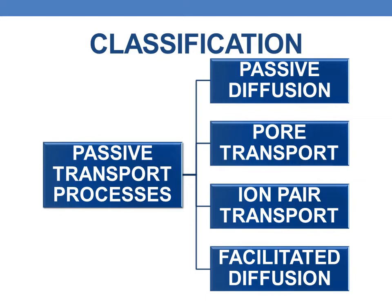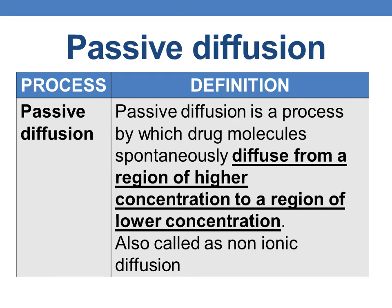Passive diffusion is a process by which drug molecules spontaneously diffuse from a region of higher concentration to a region of lower concentration. It is also called non-ionic diffusion.